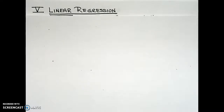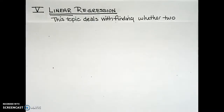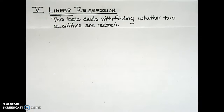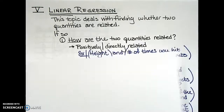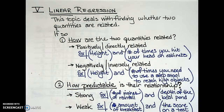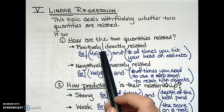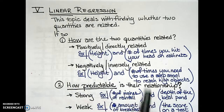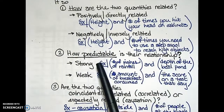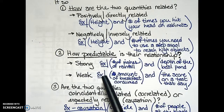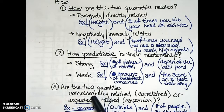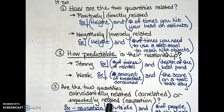In this video we continue our discussion of linear regression. Recall that linear regression deals with finding whether or not two quantities are related. As we do so, we had three follow-up questions: first, how are the two quantities related — positively or negatively? Secondly, how predictable is this relationship — is it fairly strong or is it weak? And lastly, are the two quantities coincidentally related (correlation) or expectedly related (causation)?